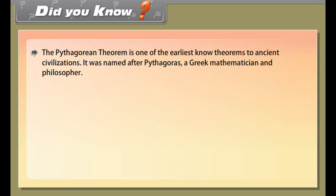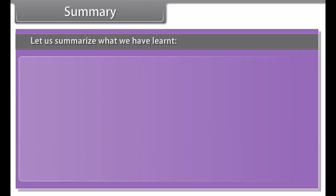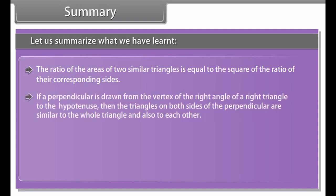Did you know? The Pythagorean theorem is one of the earliest known theorems to ancient civilizations. It was named after Pythagoras, a Greek mathematician and philosopher. The Chaopei, an ancient Chinese text, also gives evidence that the Chinese knew about the Pythagorean theorem many years before Pythagoras or his colleagues proved it. Pythagoras lived in the sixth or fifth century BC and founded the Pythagorean school in Crotona, an academy for the study of mathematics, philosophy, and natural science.